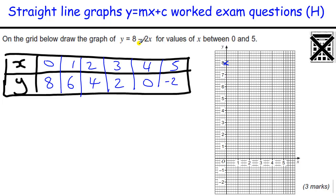Another way, a slightly quicker way, if you know how to use the equation of the line: this value 8 is the c value in our mx plus c, which is the y-intercept — that value is 8 here. So we know it crosses the y-axis at 8. The minus 2 tells us the gradient, so for every 1 across, you go down 2. When I go across 1 to 1, I go down 2 to 6. When I go across to 2, I go down 2 to 4. Then across 1, down 2, and so on.